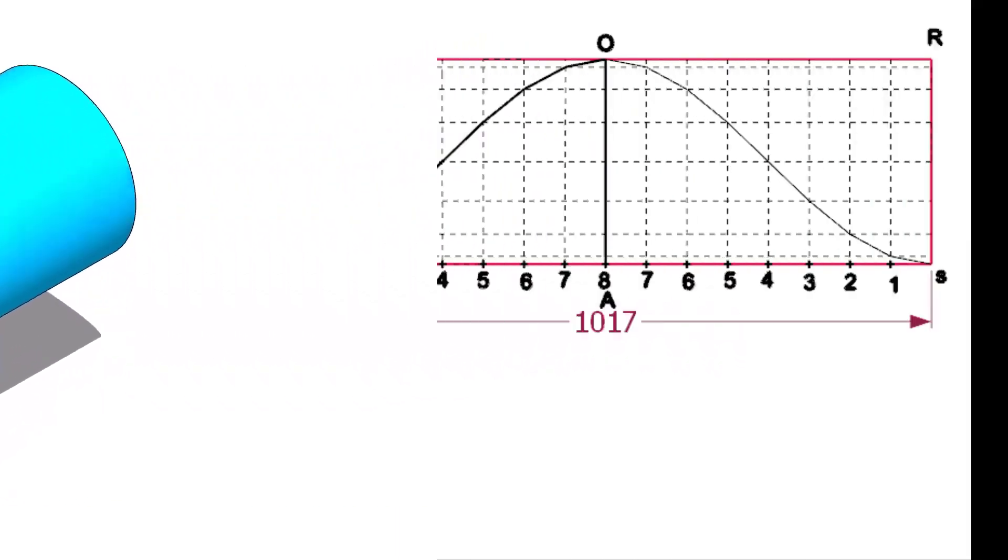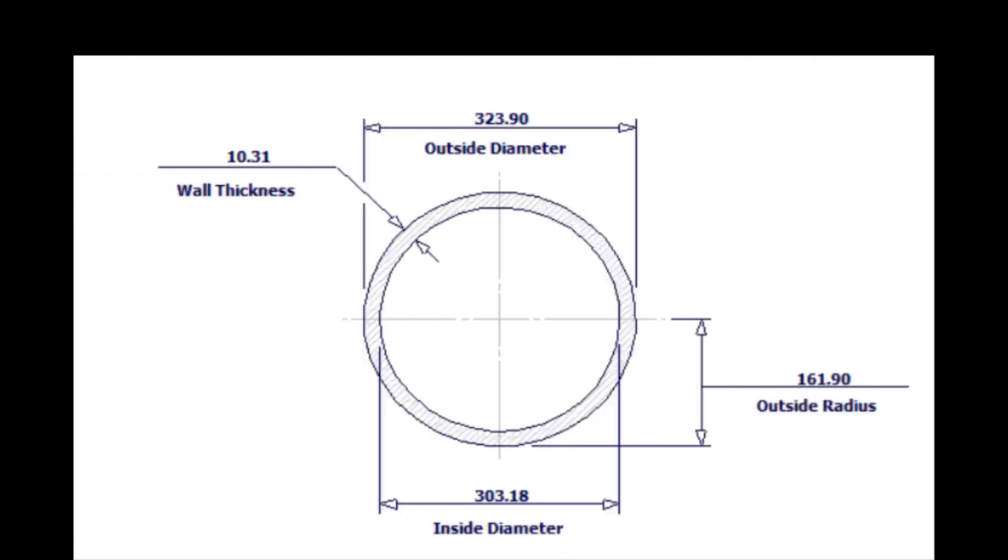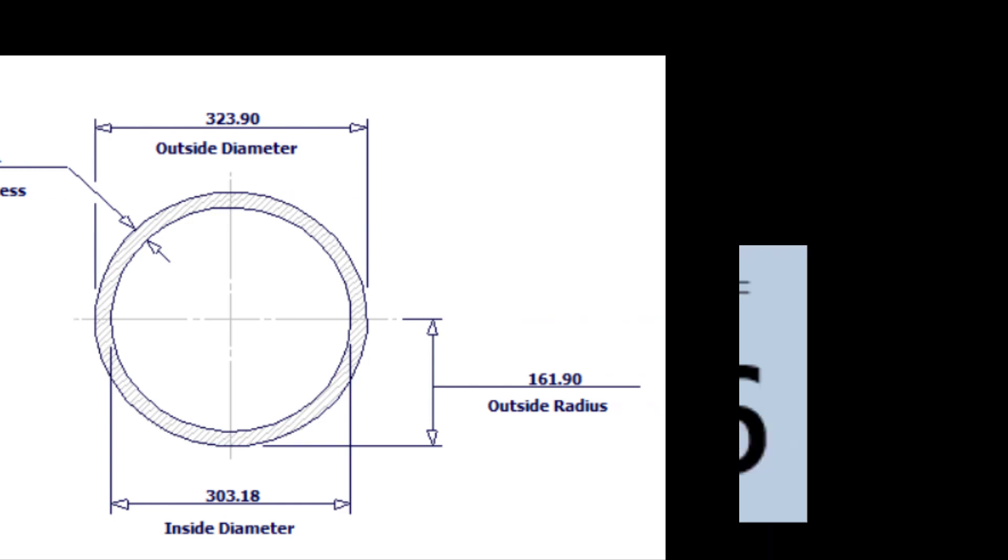In this tutorial, we will lay out a 12-inch single-cut miter. The outside diameter of a 12-inch pipe is 324 millimeters. Let us calculate the circumference. Multiply 324 by 3.14. The answer is 1017 millimeters.